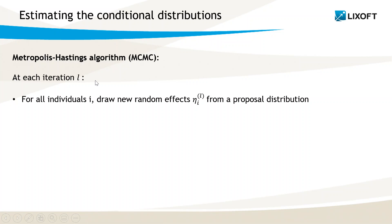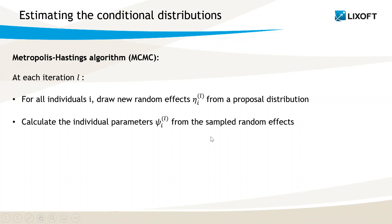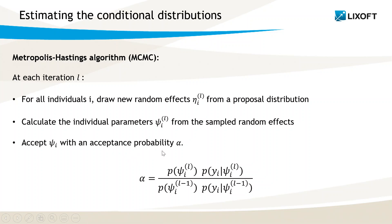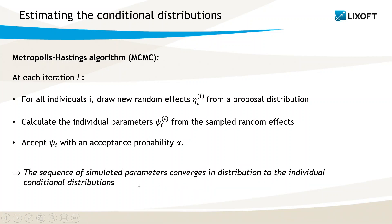It is an iterative algorithm used to simulate a sequence of individual parameters. At each iteration L, for all individuals, a new vector of random effect values is drawn from some proposal distribution. These random effects correspond to new individual parameters Psi. The new parameters are accepted with a probability that depends on the probabilities of the parameters in the population distribution and the likelihood of the individual data given these parameters at this iteration and at the previous iteration. If alpha is above 1, the new draw is kept. If alpha is below 1, the new draw is kept only with probability alpha. This acceptance probability, also called acceptance ratio, guarantees that the sequence of parameters converges in distribution to the conditional distributions.